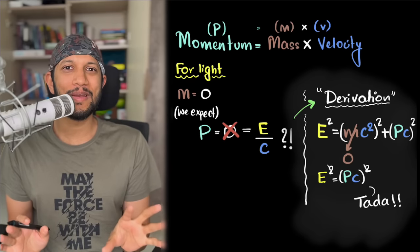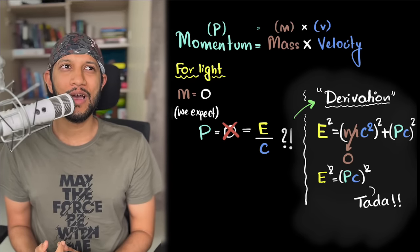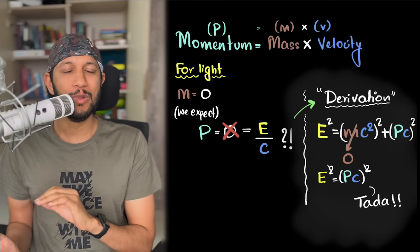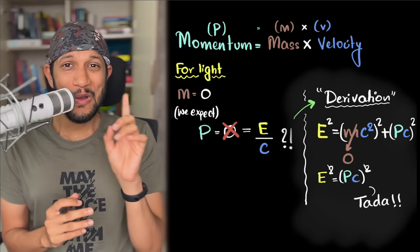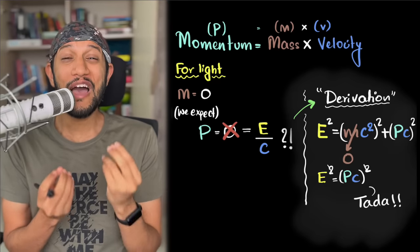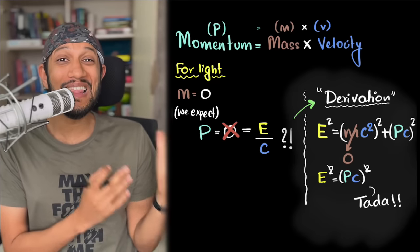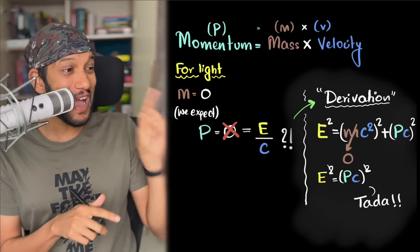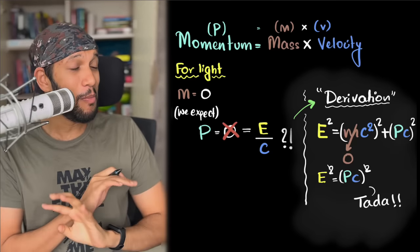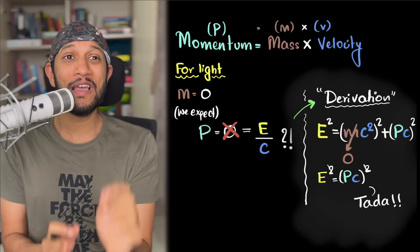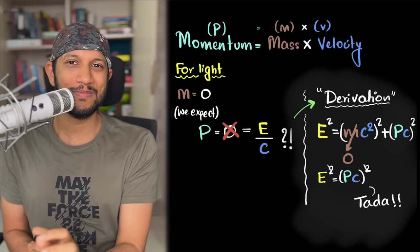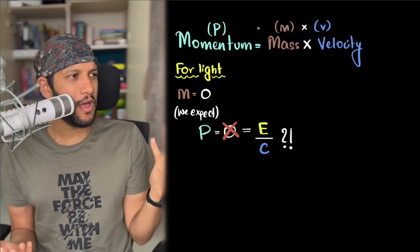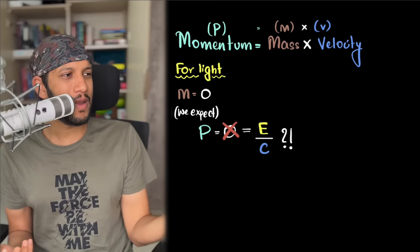So I thought I would never be able to understand where light's momentum comes from, where that equation truly comes from — until I met Feynman. Feynman blew my mind away, and by the end of this video we will have a much deeper insight of why light has momentum even though it has no mass, and we'll actually derive that equation, all using high school electromagnetism. So let's begin.